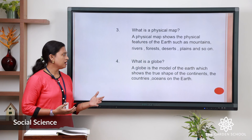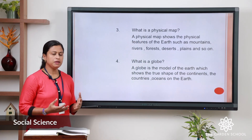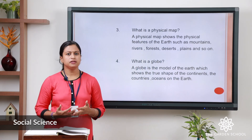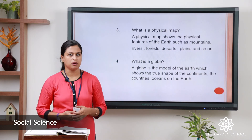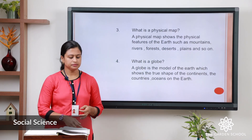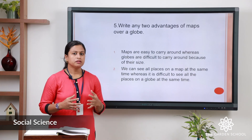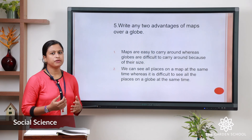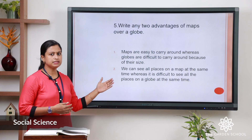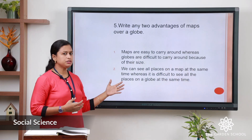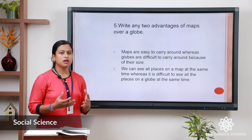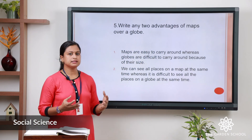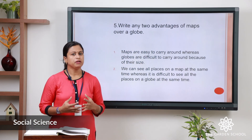Fourth question: what is a globe? A globe is a model of the earth which shows the true shape of the continents, countries, cities, towns, and so on. Fifth question: write two advantages of map over a globe. The first advantage is maps are easy to carry around whereas globes are difficult to carry. Second: we can see all the places on a map at a time, but on a globe we cannot.